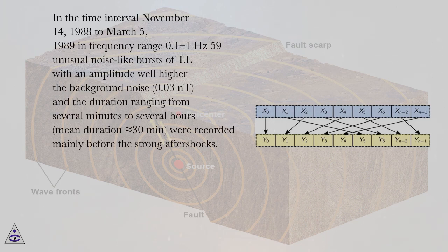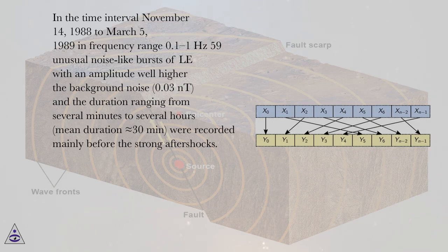In the time interval November 14, 1988 to March 5, 1989 in frequency range 0.1 to 1 Hz, 59 unusual noise-like bursts of ULF with an amplitude well higher than the background noise 0.03 nT, and the duration ranging from several minutes to several hours, mean duration 30 minutes, were recorded mainly before the strong aftershocks.